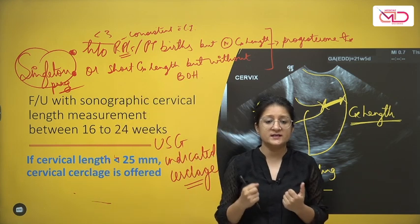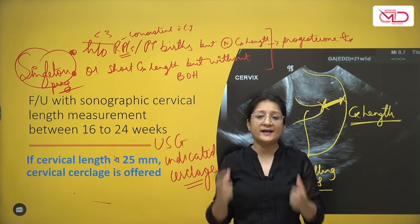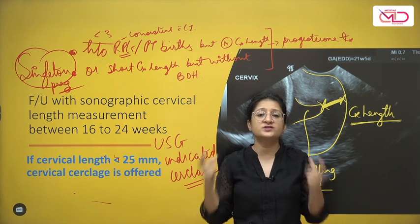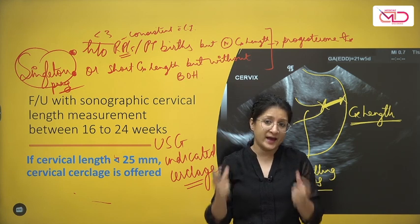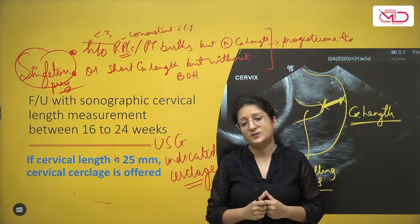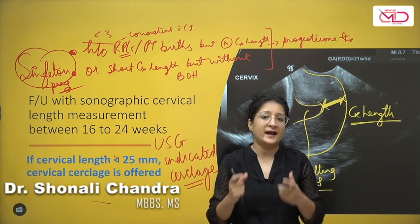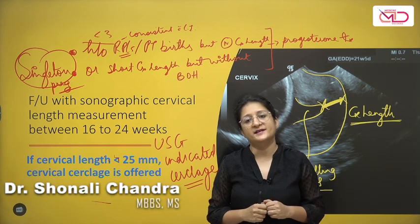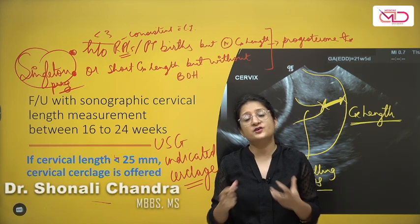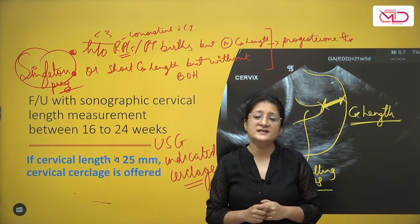To summarize: cerclage is placed either as history-indicated cerclage — three or more bad obstetric events consistent with cervical insufficiency — or as ultrasound-indicated cerclage when cervical length has shortened on follow-up. These are the two very important case scenarios for cervical insufficiency highlighting when cerclage placement is recommended. Thank you so much and I hope you enjoyed this video.